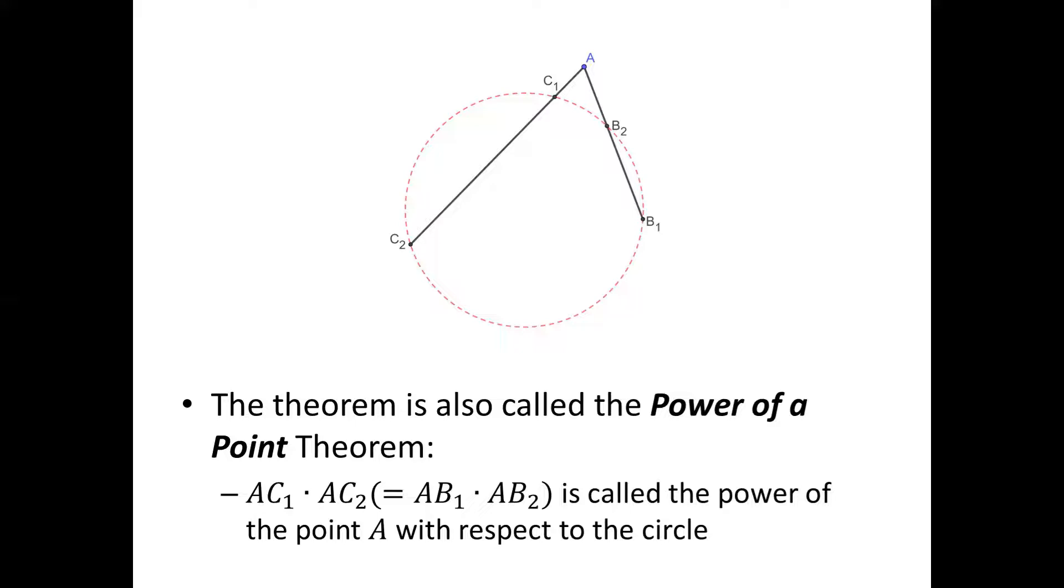The product is called the power of the point with respect to the circle. Its inverse is also valid. If we can prove AB1 · AB2 = AC1 · AC2, then the four points B1, B2, C1, and C2 are lying on the circle. And this is our objective.